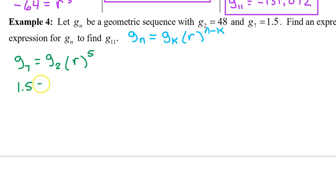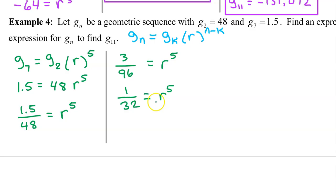But g7 is 1.5. So we have 1.5 is equal to 48 r to the 5th power. Next we need to divide both sides by 48. For a moment we have 1.5 over 48 equals r to the 5th power. I'm anxious to get rid of this decimal. And I know that if I multiply 1.5 times 2, I'll get 3. So I'm going to multiply the numerator and the denominator by 2. So that will give me 3 over 96 is equal to r to the 5th power. But now I notice that 96 is divisible by 3. This reduces to 1 over 32 equals r to the 5th power.